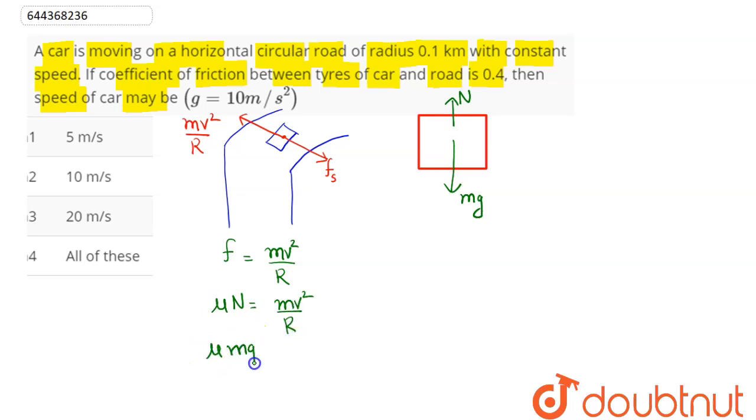normal here equals mg, so we can say μmg is equal to mv² by r. Hence this relation becomes, the speed of car is being asked, hence v is equal to root under μr into g. Now